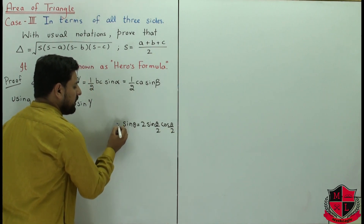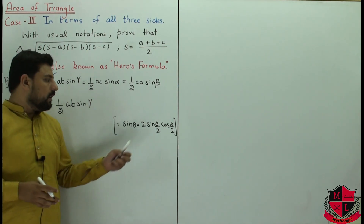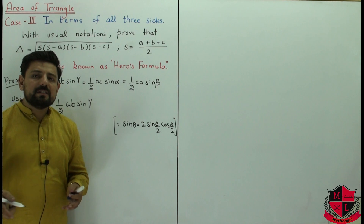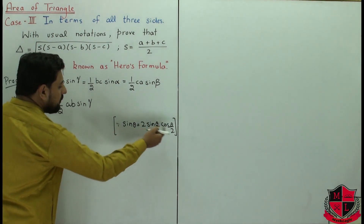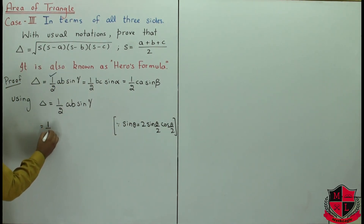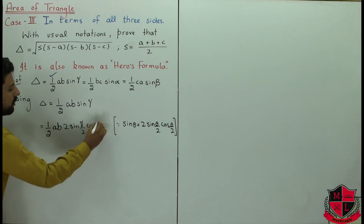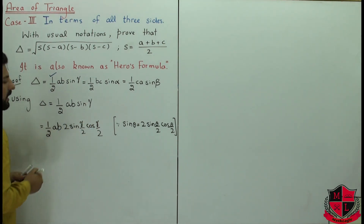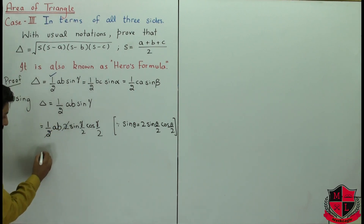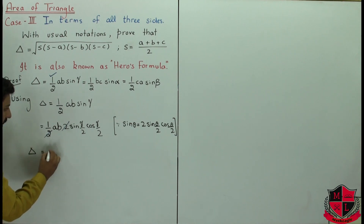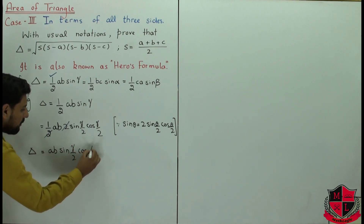We use the double angle formula from unit 10, exercise 10.3. You can find the link in the description below. We replace sine of gamma using the double angle identity: sine(gamma) = 2 sine(gamma/2) cos(gamma/2). So the area becomes one-half times ab times 2 sine(gamma/2) cos(gamma/2). The 2 and one-half cancel, leaving area of triangle equal to ab sine(gamma/2) cos(gamma/2).